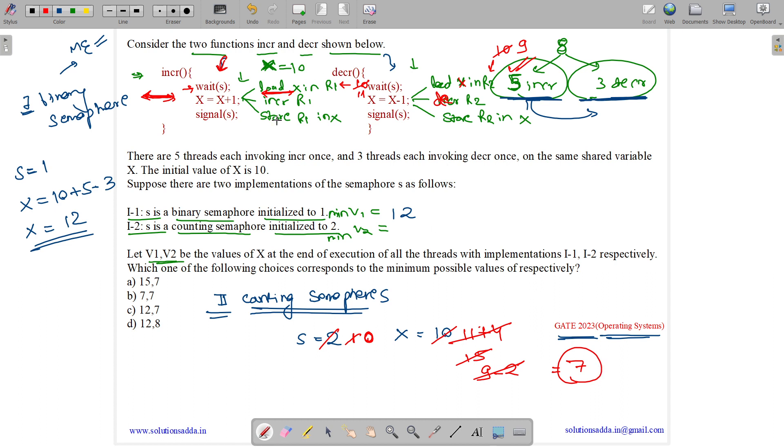Why it happened? Because mutual exclusion was not guaranteed. Thus we can have 2 threads in critical section. So V2 is 7 and V1 was 12. So answer is 12 and 7, Option C.